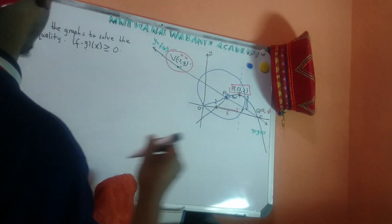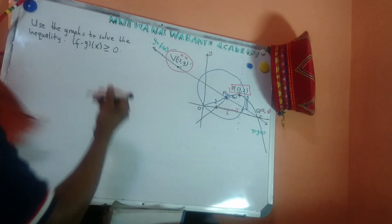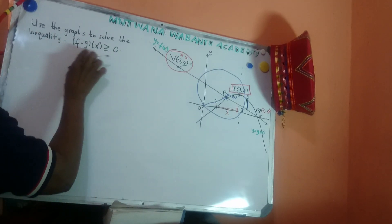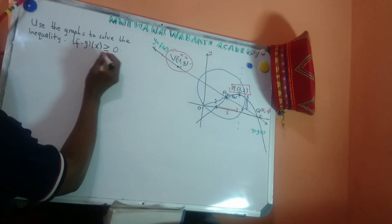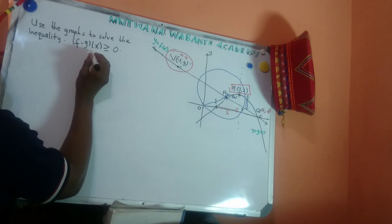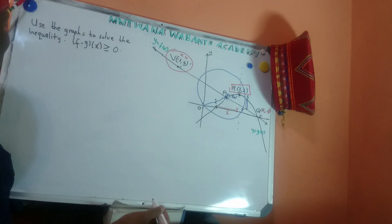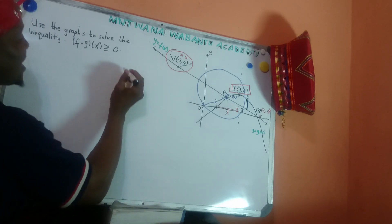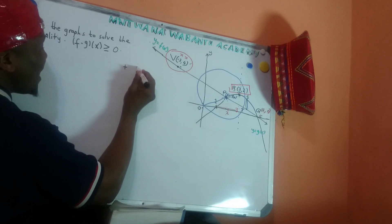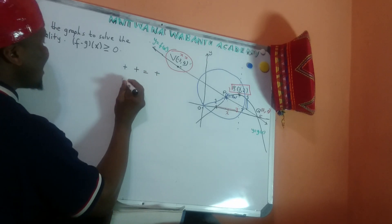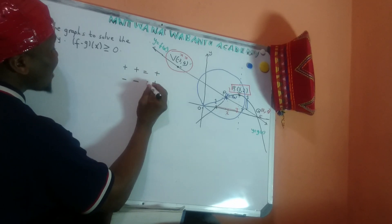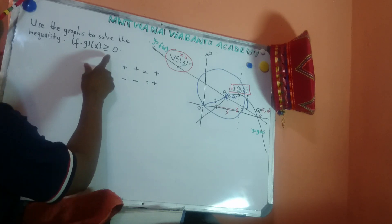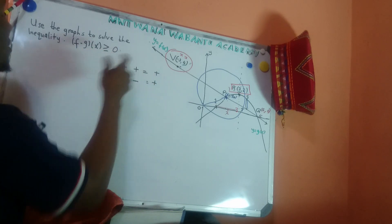Let's use this graph to solve the following inequality. When you take f(x) and g(x) and you want something greater than zero — we know that positive times positive gives positive, and negative times negative also gives positive. So greater than zero means positive.